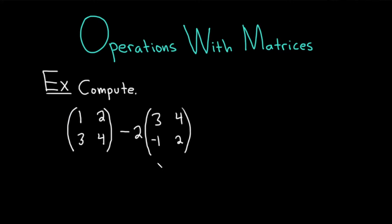Let's start with an example of subtraction. We have to compute the following. We have the matrix with entries 1, 2, 3, 4 minus 2 times this matrix here with entries 3, 4, negative 1, 2. So we're basically subtracting two 2 by 2 matrices.